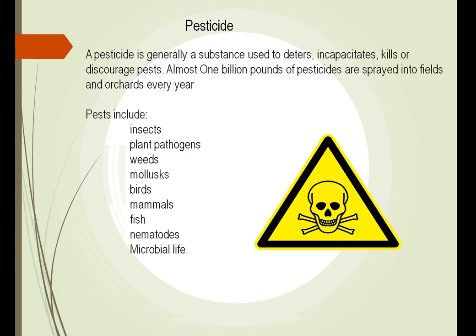What is a pesticide? It comes from the Latin term for killing pests. This means it is used to deter, incapacitate, or kill pests. One billion pounds of pesticides are sprayed into fields every year.